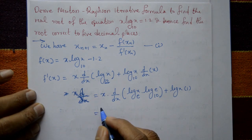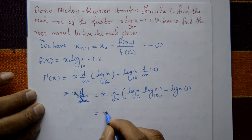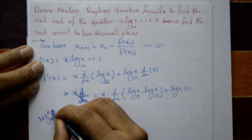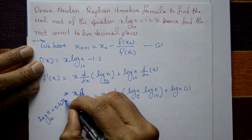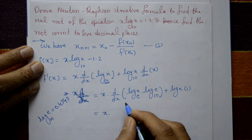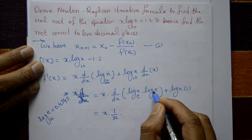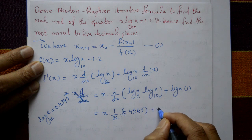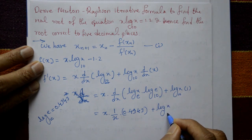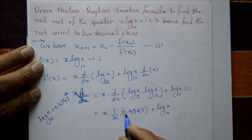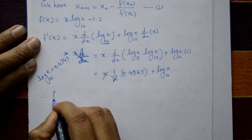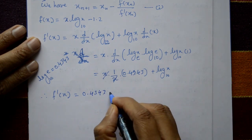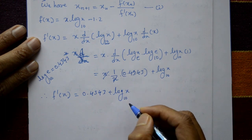This gives x times (1/x)·0.4343 plus log₁₀(x), where log_e(10) = 0.4343. The x's cancel. Therefore f'(x) = 0.4343 + log₁₀(x).